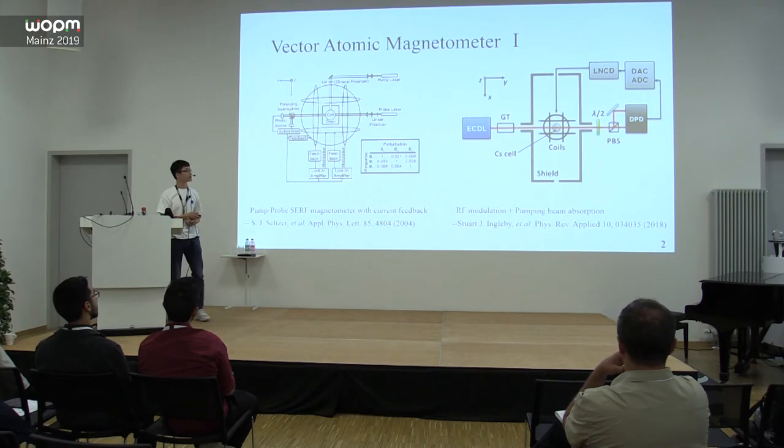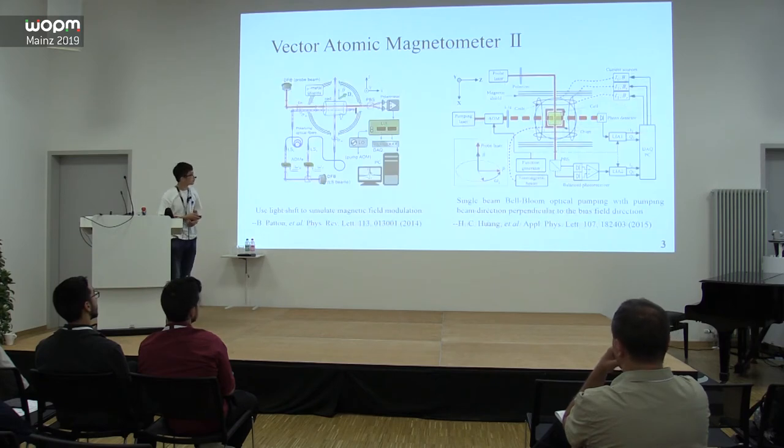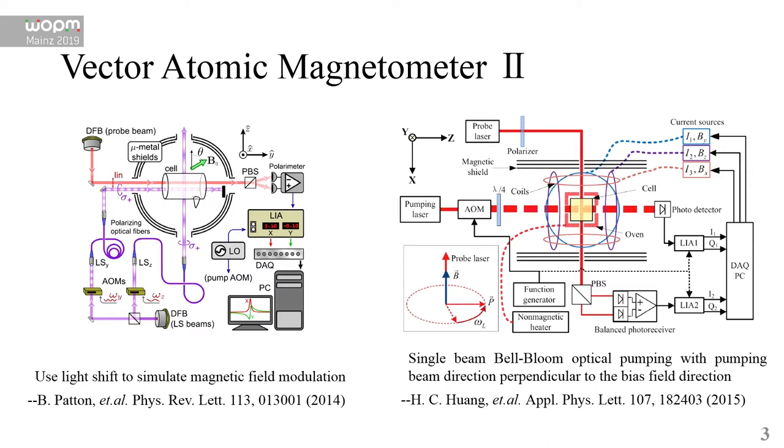The third work uses light shift to simulate the magnitude of field modulation and realize an all-optical vector magnetometer for the first time. They also point out that the light shift will increase the noise level.